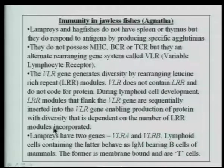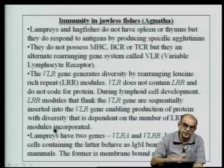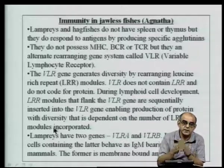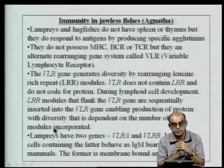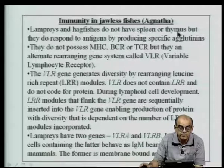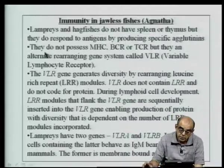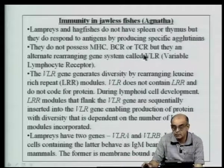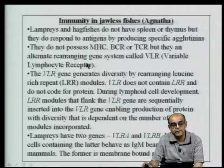The most important take-home from this evolutionary lecture was the discovery of a rearranging gene system present in lampreys and hagfishes — organisms that do not have spleen or thymus but do respond to various antigens by producing specific agglutinins. They do not possess MHC or the B cell receptor or T cell receptor as known in higher mammals, but they have an alternate rearranging gene system — the variable lymphocyte receptor, or VLR.